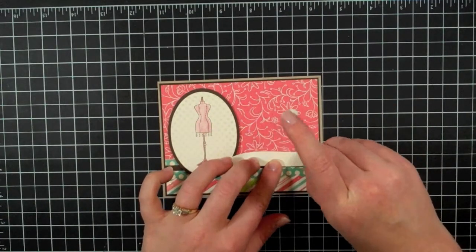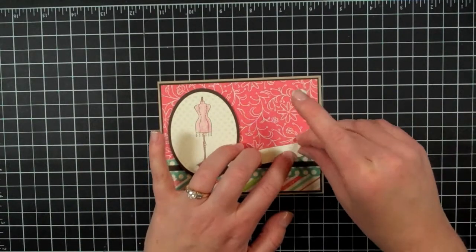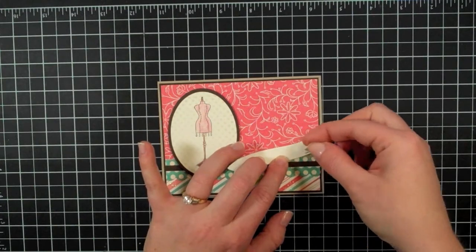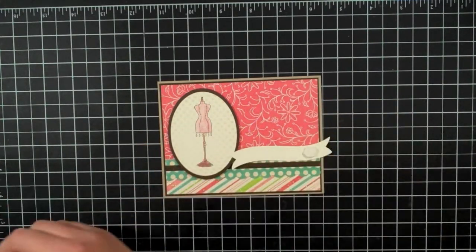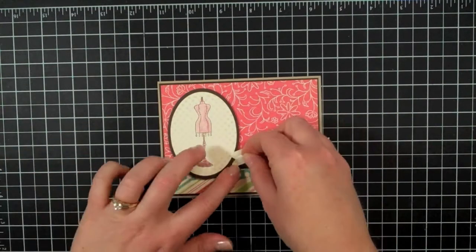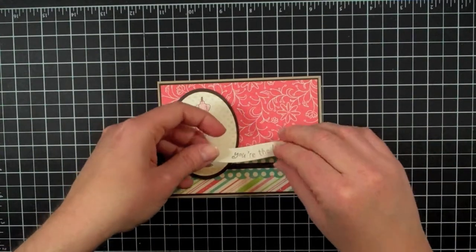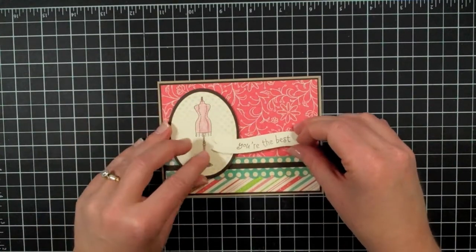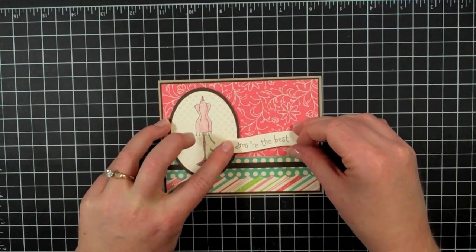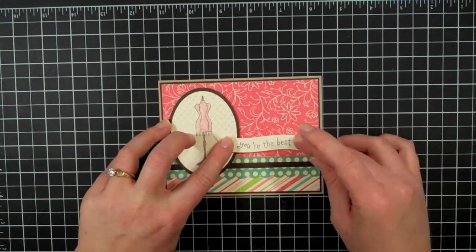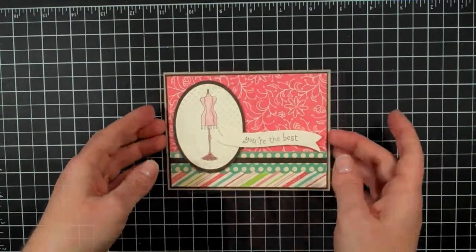I'm going to have two dimensionals on this side of the banner and I'm going to have one dimensional on this side of the banner. So this banner will be popped up from the oval.